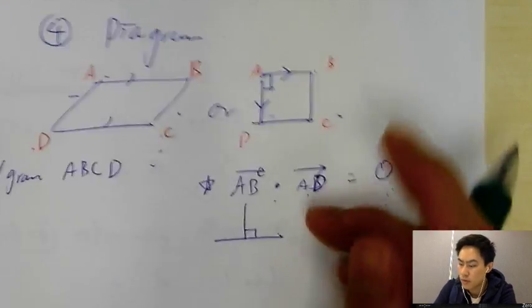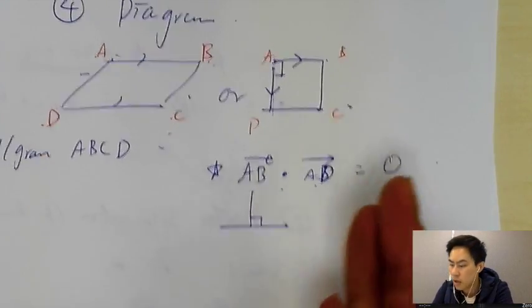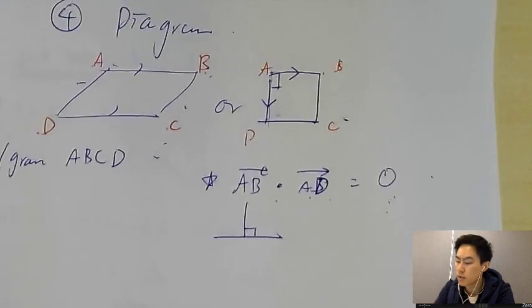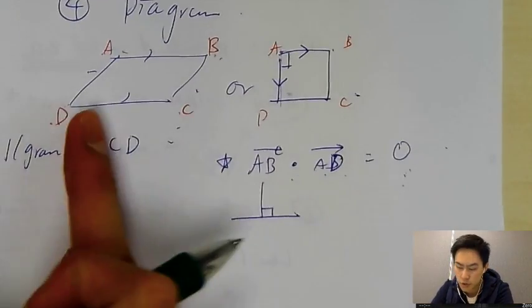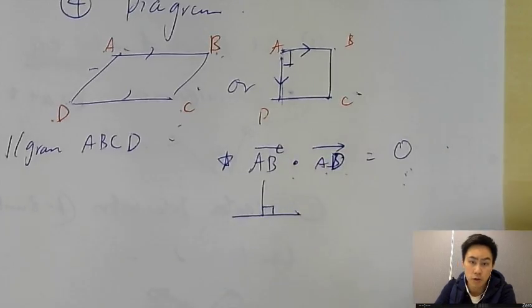But if you don't understand the dot product, I'll recommend you try my lesson on note 1. That will explain all the basic concepts for position vector, direction vector, and also the angle.